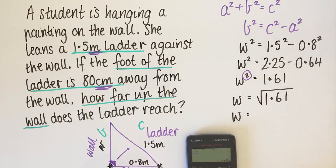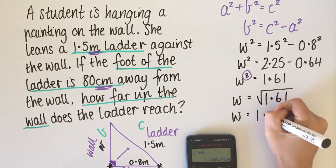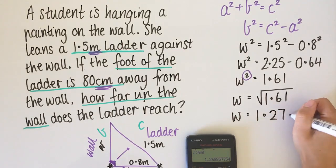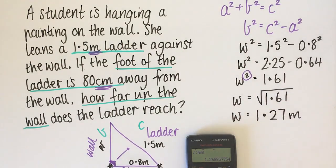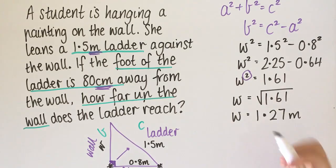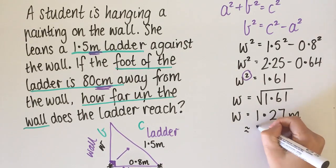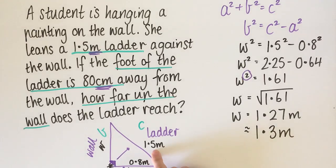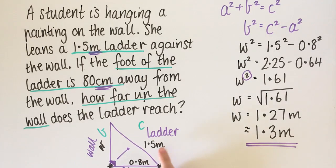The square root of 1.61 is 1.27 metres. Since the question doesn't specify decimal places but uses one decimal place, we can round to 1.3 metres. Let's double check — 1.5 is the longest side, and our answer of 1.3 metres is shorter than 1.5, so that works out well.